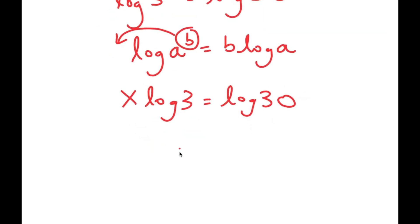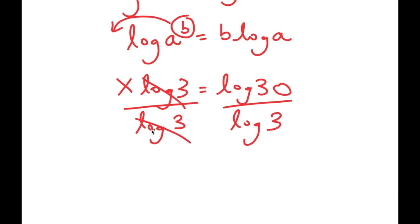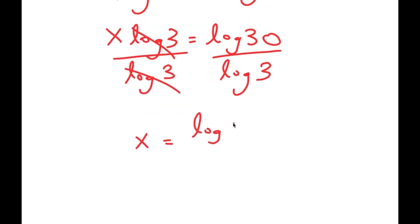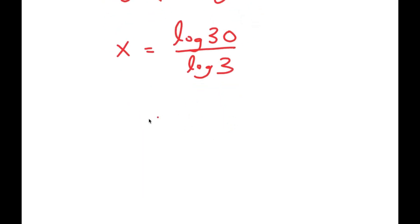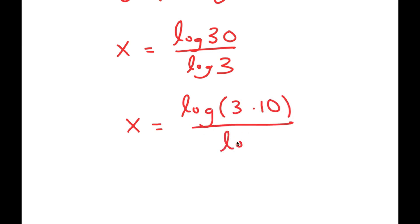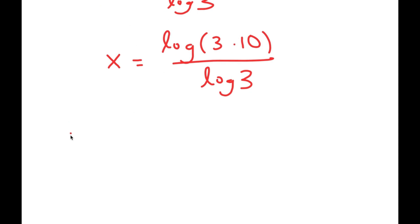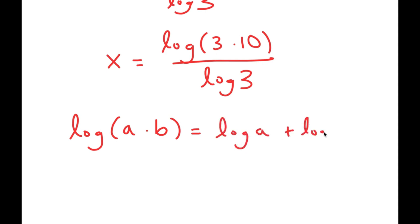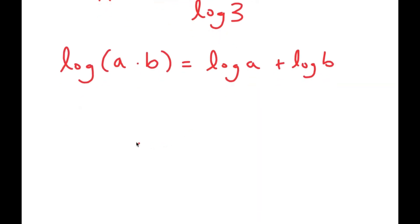Now that x is an actual term, I can solve for it by getting rid of log 3 — I'm going to divide both sides by log 3, so these cancel out and I get x equals log 30 over log 3. Now I'm going to rewrite log 30 as log of 3 times 10. If I have something in the form log of a times b, this is equal to log a plus log b. So log of 3 times 10 equals log 3 plus log 10.